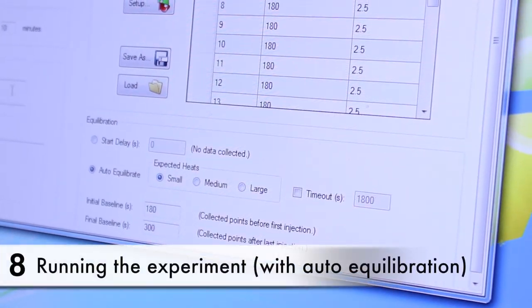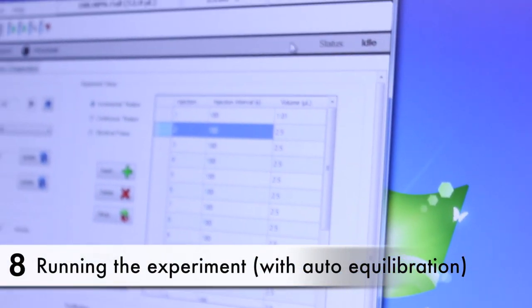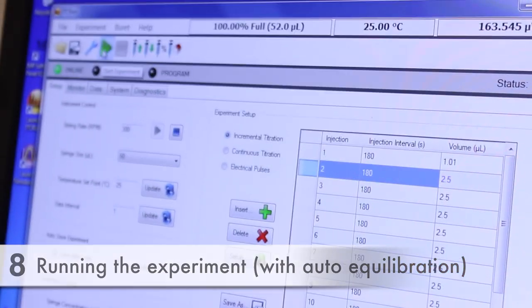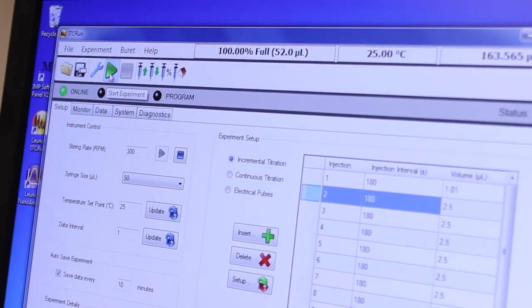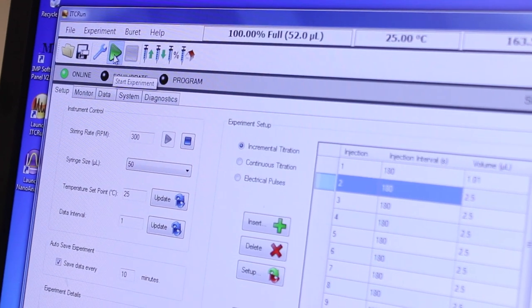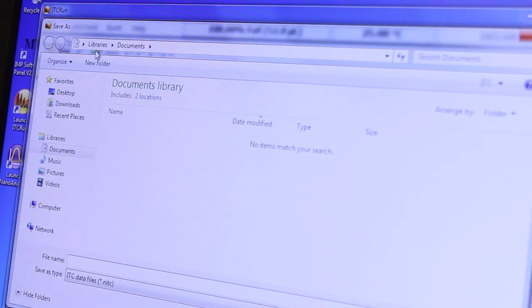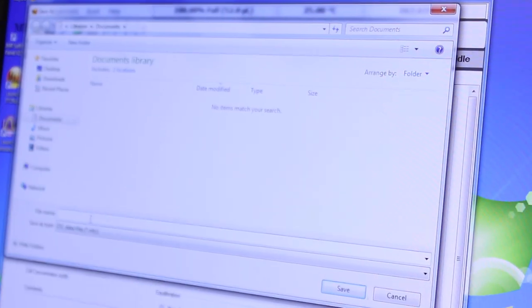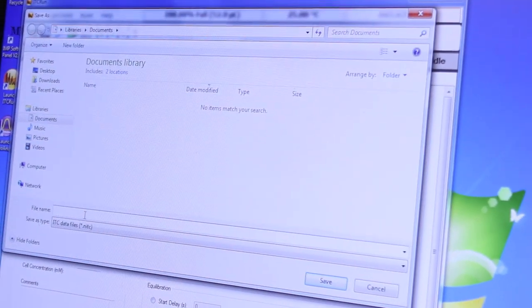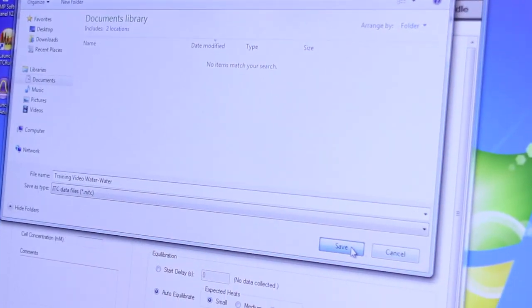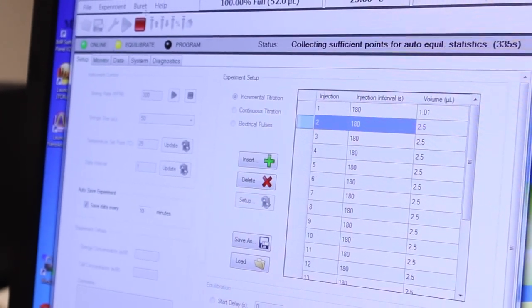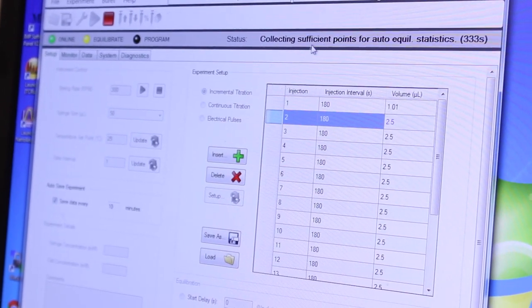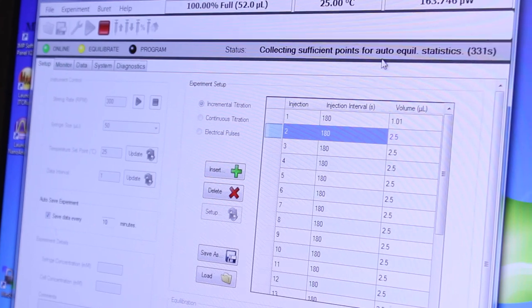So now everything is ready we can start the experiment by clicking on the green triangle here that says start experiment. It will prompt you for a name of a file if you haven't entered one already.